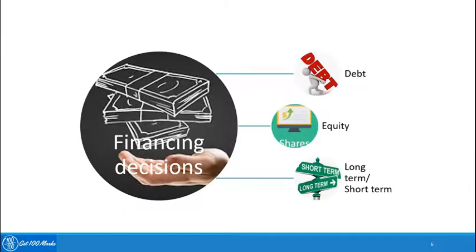The financing decision is another very important decision. There are two ways in which a company raises finance: debt and equity. Debt is in the form of borrowed funds; equity is owners' capital, which can come from angel investors, shareholders, promoters, and others. Capital can be raised short-term — normally called working capital — for expenses of shorter duration.